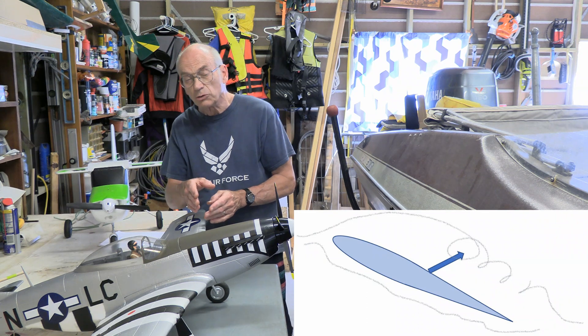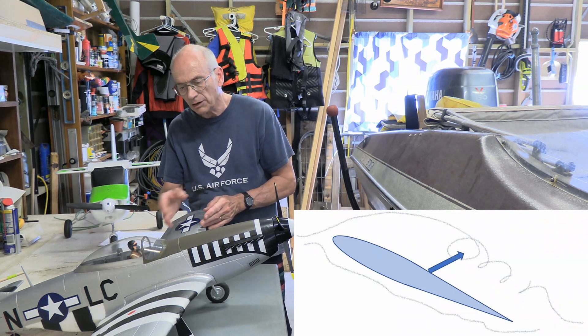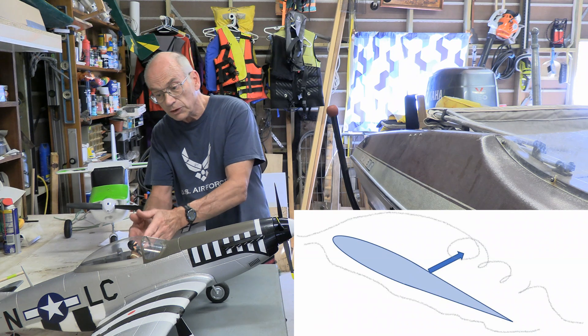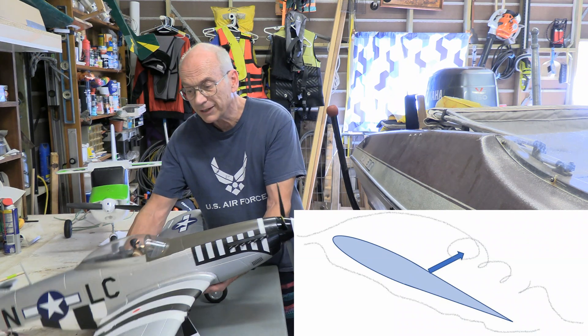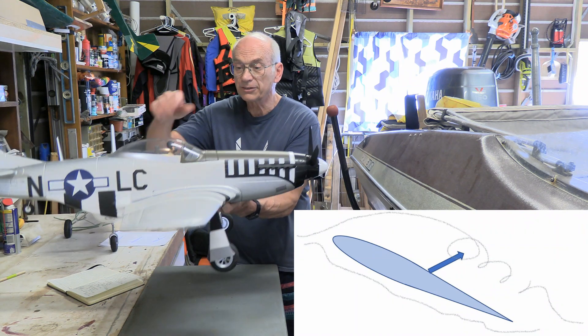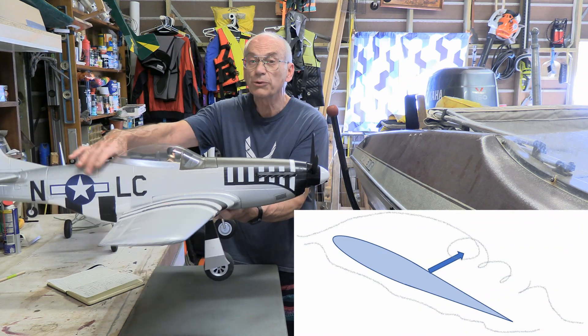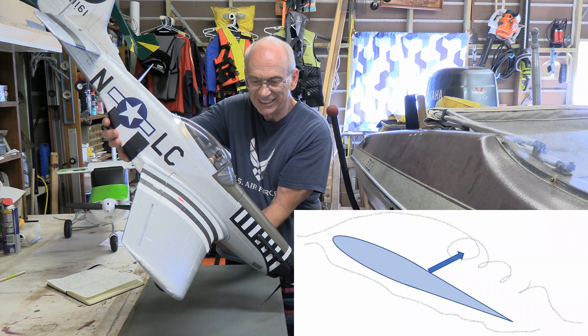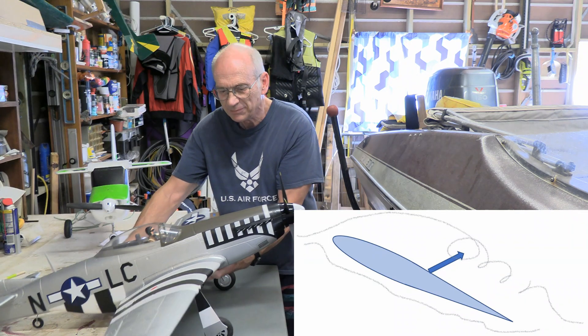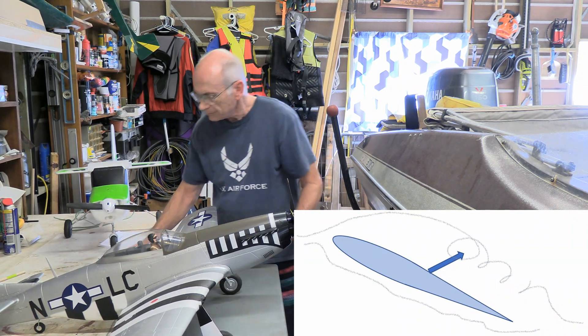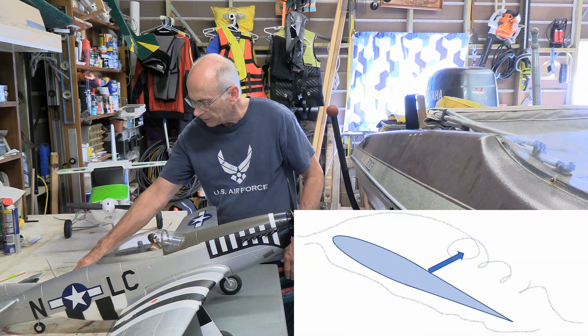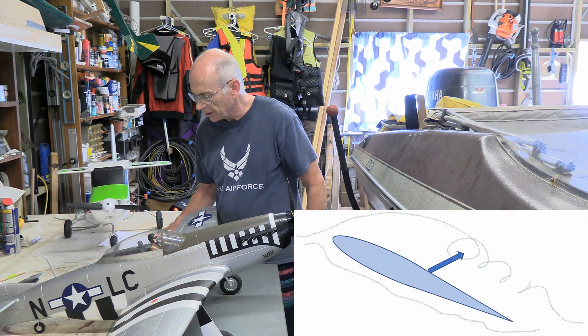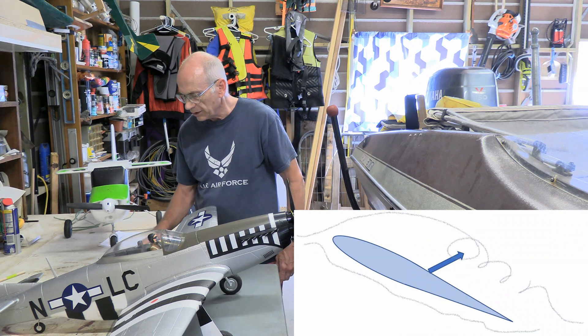But with that stall, there is a dramatic change in where the position of the force is. Now it's moving towards the back. And if you have a low wing plane like this, and it moves towards the back, and the center of gravity is still farther forward, what's going to happen? You're going to go down in a hurry. So that is typically what happens as you get into a stall situation.